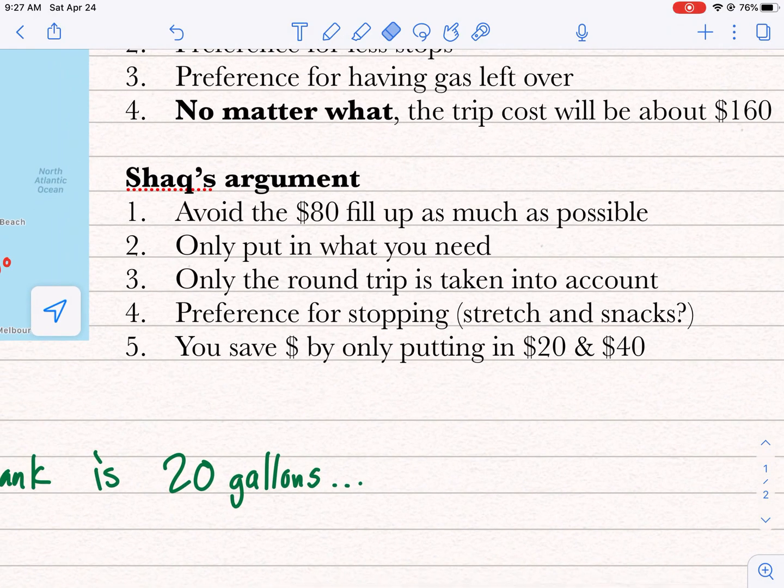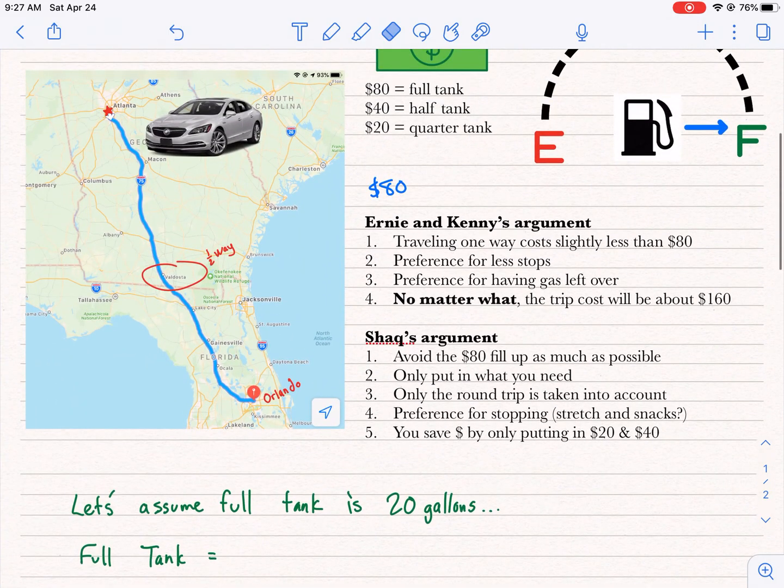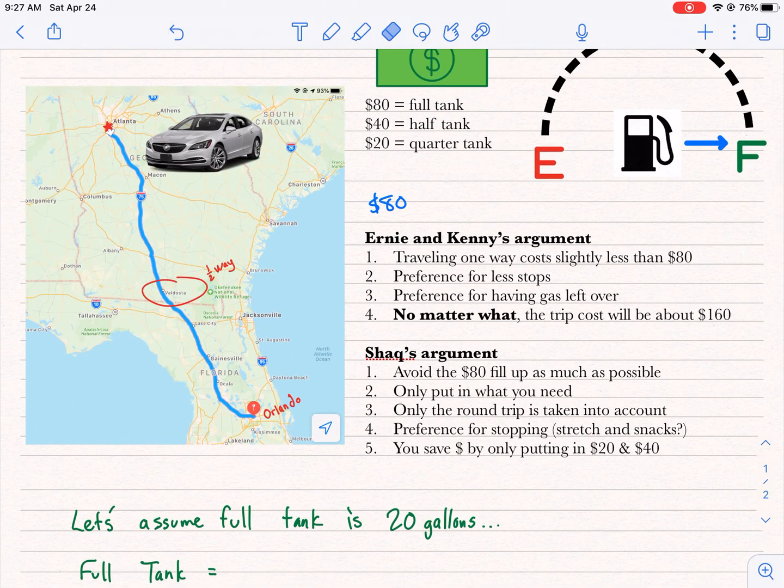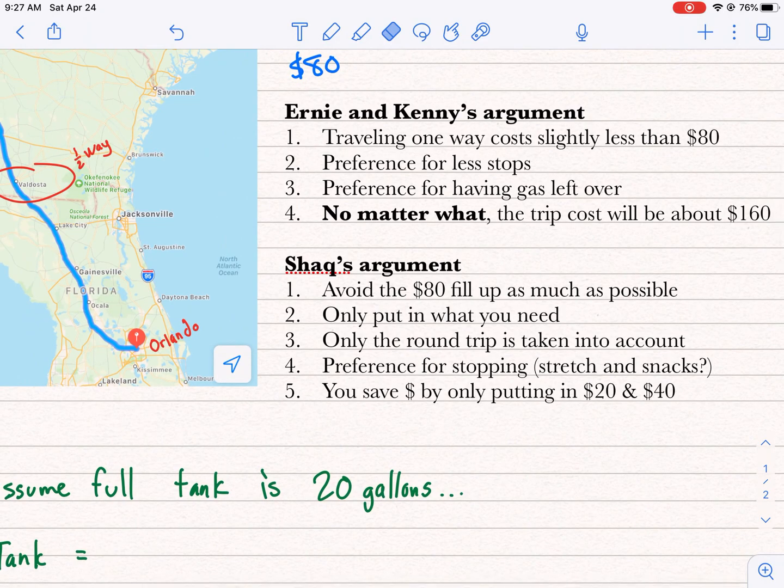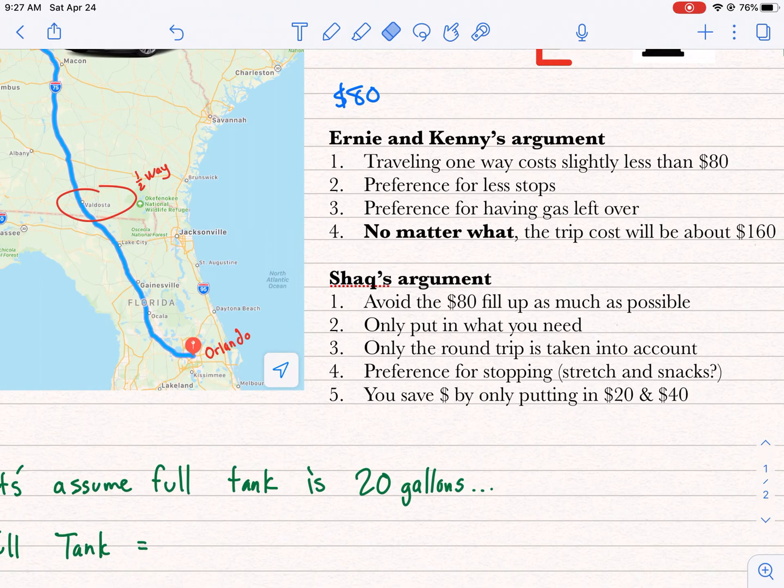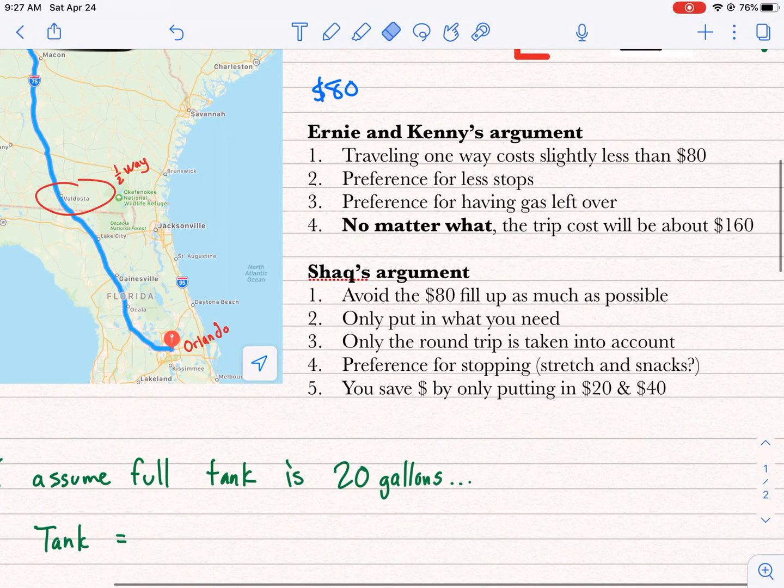Only put in what you need. Only the round trip is taken into account. He doesn't care about having gas left over to go to the grocery store. He also has preference for stopping. He needs to probably get out and stretch, get some snacks maybe. And then number five, this is where it breaks down. He says you save money by only putting in $20 and $40.